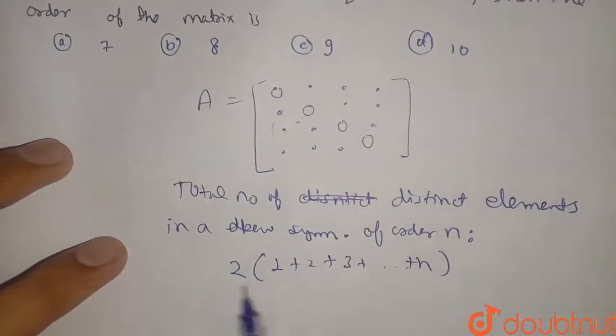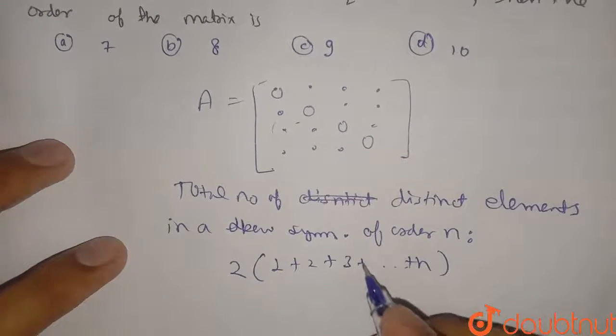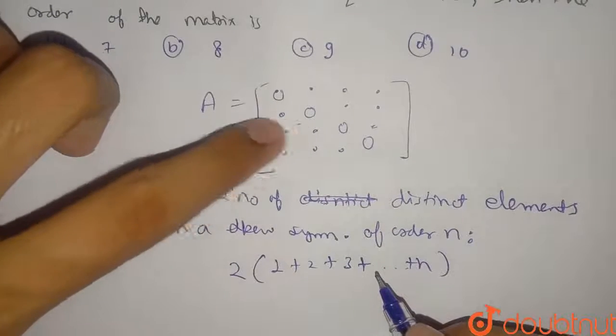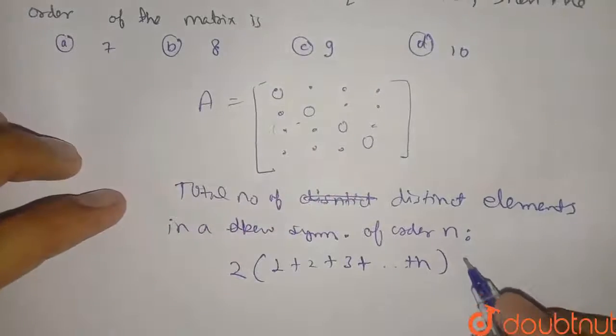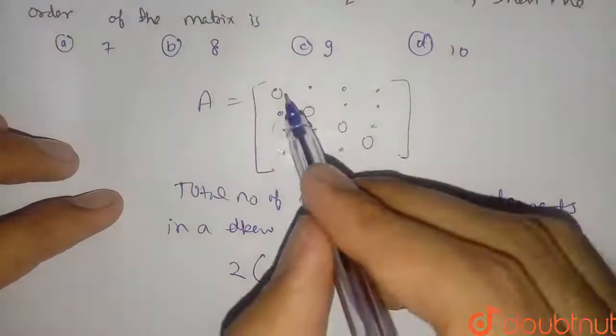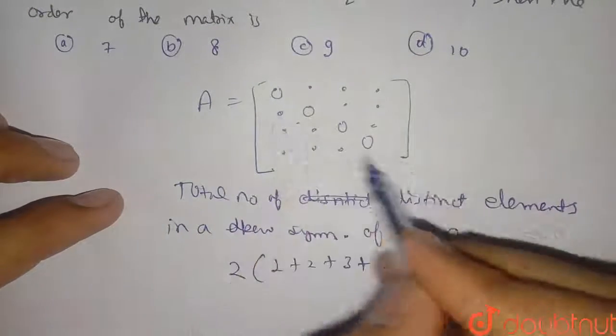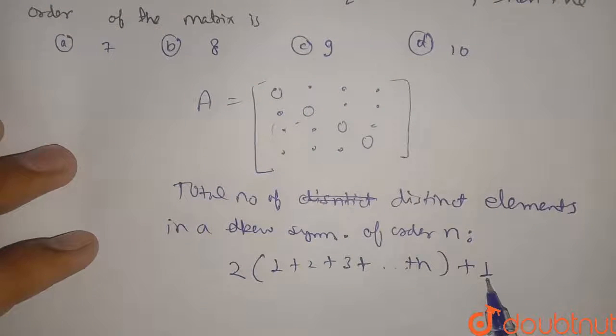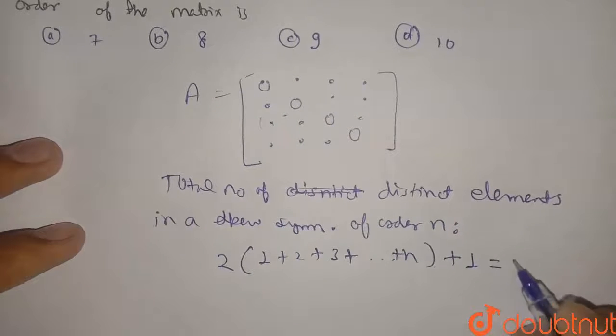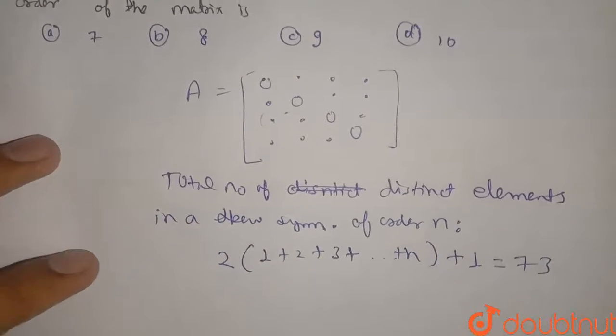So twice of this can be distinct element. This can be distinct, this both distinct, plus one because all these zeros of diagonal element is also one distinct element. So plus one for the zero. This is given as equal to 73.